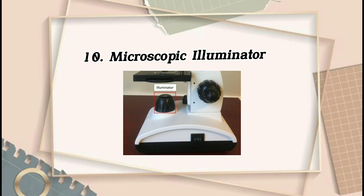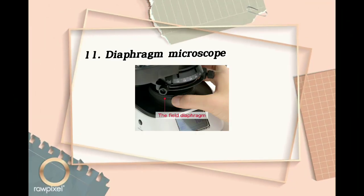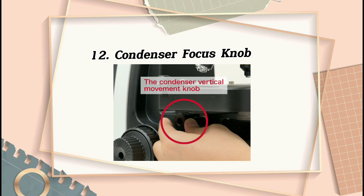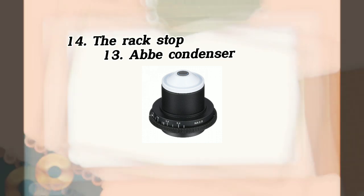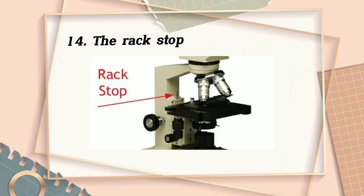Microscope illuminator — provides even, high-intensity light at the plane of the field aperture. Iris diaphragm — consists of thin metal leaves for varying the size of the opening that determines the cross-section of the light ray. Condenser focus knobs — allow the user to move the condenser lens up or down. Abbe condenser — an adjustable lens used as a condenser for a compound microscope. Rack stop — an adjustment that determines how close the objective lens can get to the slide.